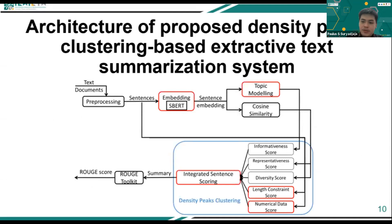This research proposes a cluster-based automatic text summarization using SBERT for embedding and topic modeling, and density peak clustering for the clustering process. First, preprocessing is carried out for the input text document, which splits it into sentences. Next, the sentences are processed by SBERT to produce sentence embeddings. We use a pre-trained SBERT model trained with a semantic textual similarity task. The resulting sentence embeddings are then used for topic modeling and to calculate similarity scores between sentences.